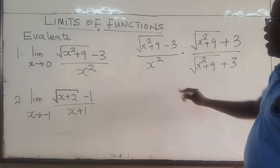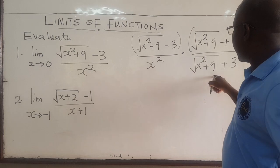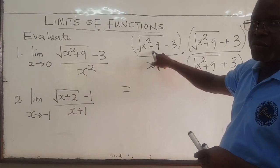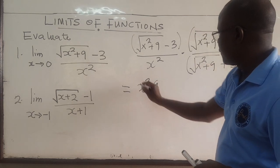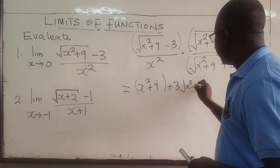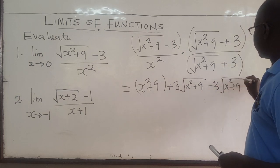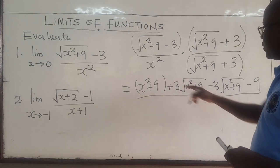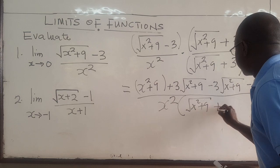Nothing has changed because the conjugate factors cancel. Now if you multiply this out, you multiply square root of x squared plus 9 times square root of x squared plus 9, and the square root goes away giving x squared plus 9. Then square root of x squared plus 9 times 3 gives plus 3 times square root of x squared plus 9. Negative 3 times that gives negative 3 times square root of x squared plus 9. And negative 3 times 3 is negative 9. All of this is over x squared multiplied by the square root of x squared plus 9 plus 3.